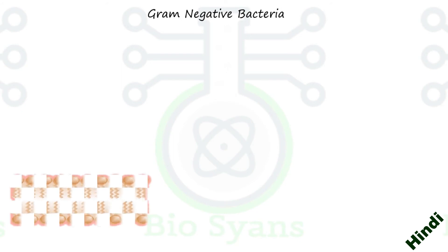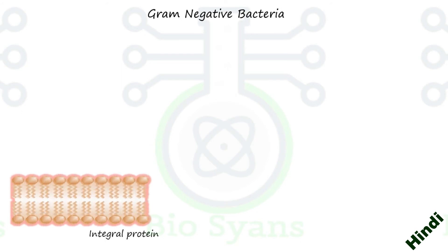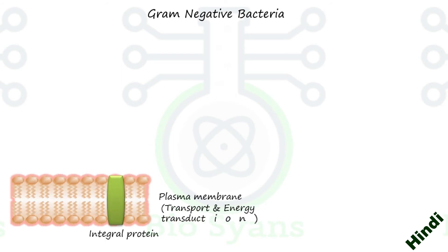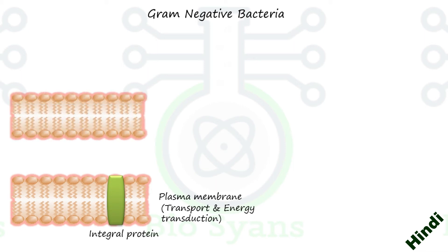Gram-negative bacteria — plasma membrane helps in transport and energy transfer. In gram-negative bacteria there is also an outer membrane present.